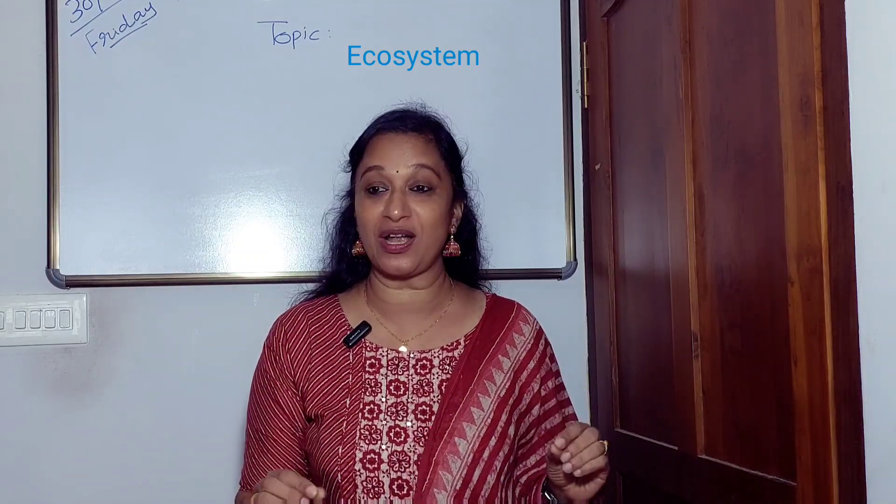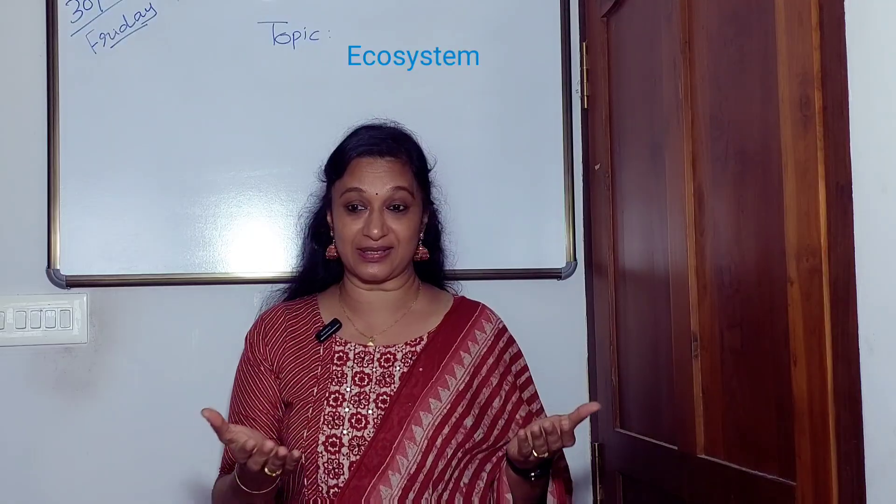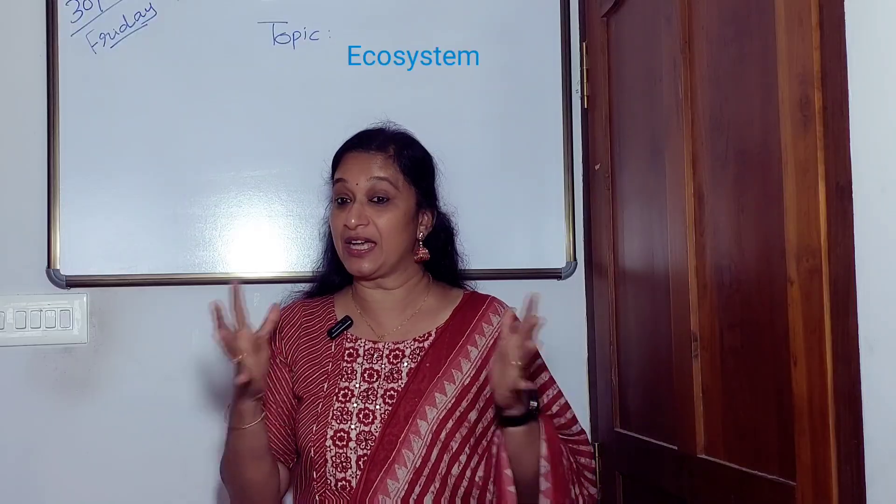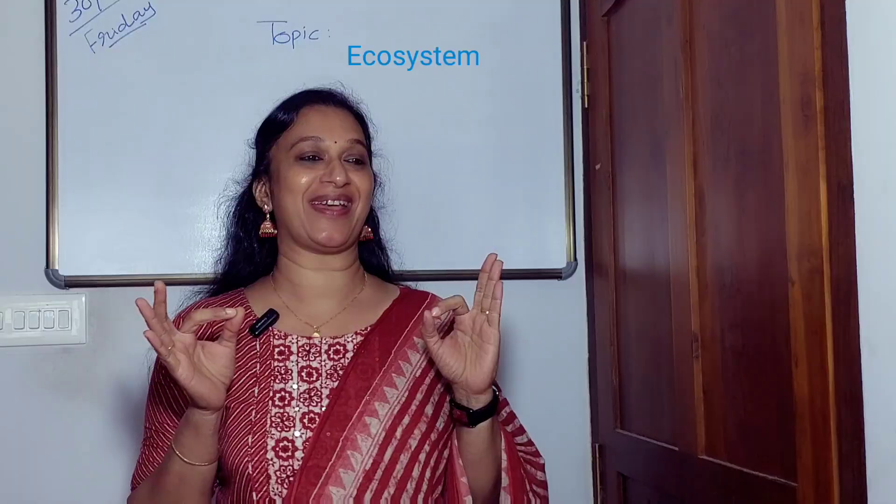Tell me, what is an ecosystem? An ecosystem is a place where all living things like plants and animals, and non-living things like water, air and soil, work together. Very good. Why is balance important in nature? Because all living and non-living things depend on each other. If one part is too much or missing, everything else suffers. When there is balance, nature is healthy and happy.